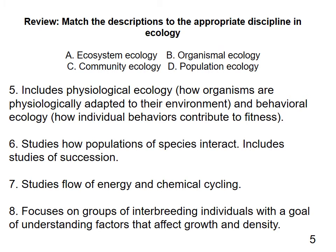Let's match examples to the type of ecology. Number five — physiological ecology and behavioral ecology — is organismal ecology. Number six — studies of how populations of species interact, including succession — is community ecology. Number seven — studies flow of energy and chemical cycling — is ecosystem ecology. Number eight — focuses on groups of interbreeding individuals with the goal of understanding factors affecting growth and density — is population ecology.